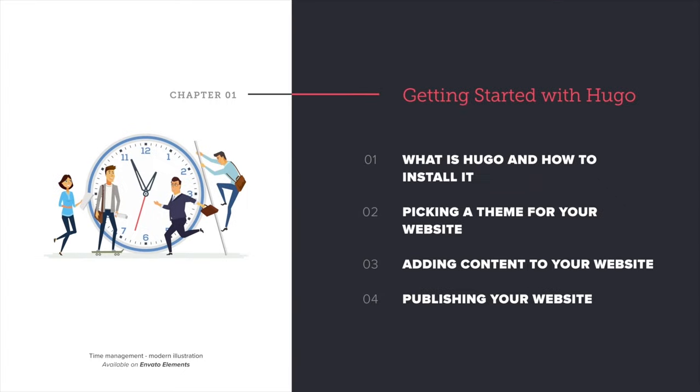In this course, I'll show you how to install Hugo, how to pick a theme, and configure your website with just a few lines of code, how to add content, and also how to publish that website to a live server using Netlify. If you do exactly what I do in this course, you'll get a live static website for exactly $0. Hugo is free, and I'll also show you a cool way of hosting a website on a live server for free.